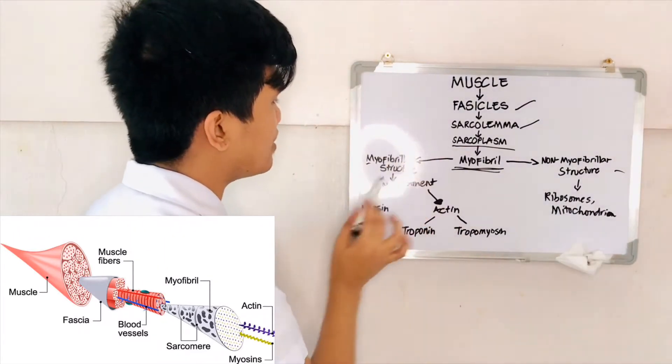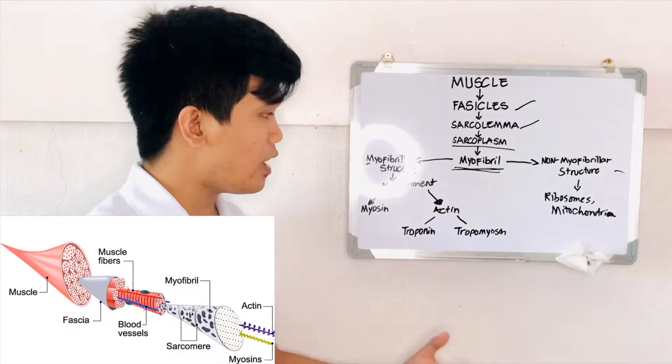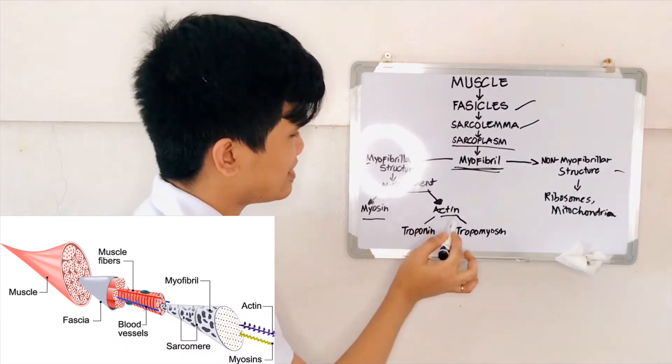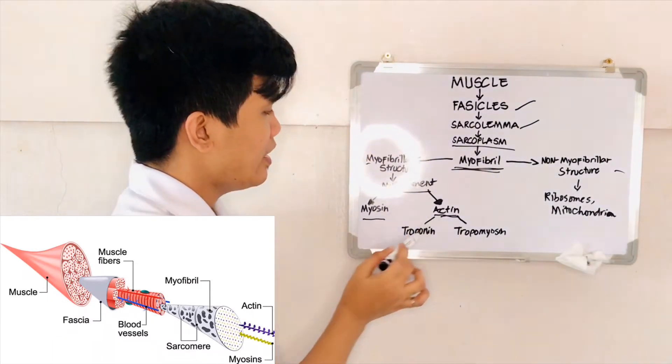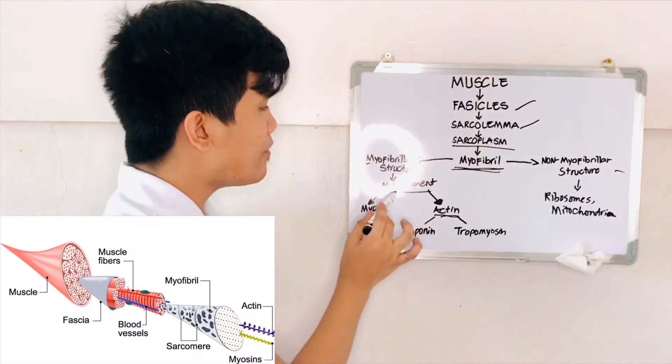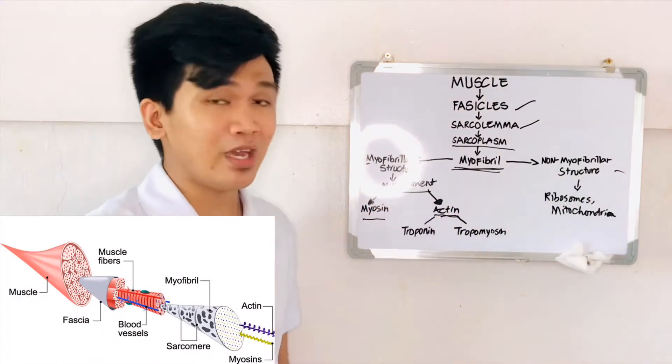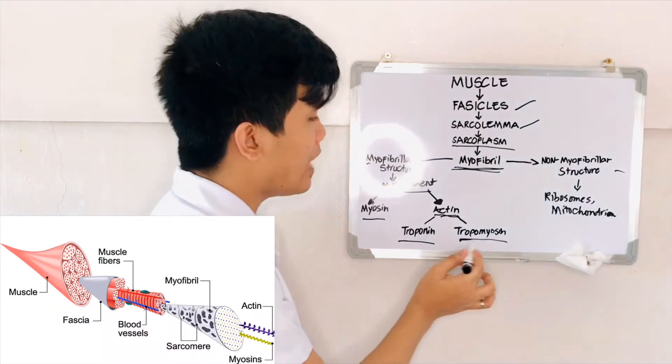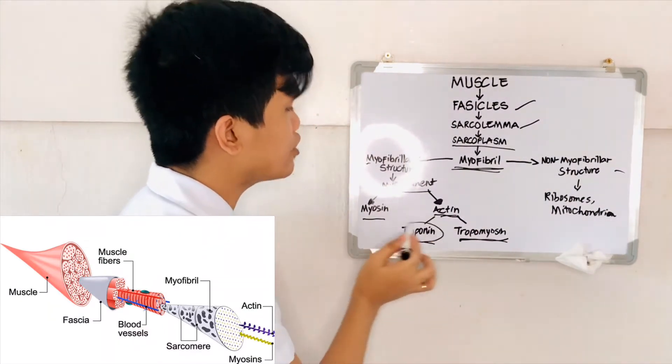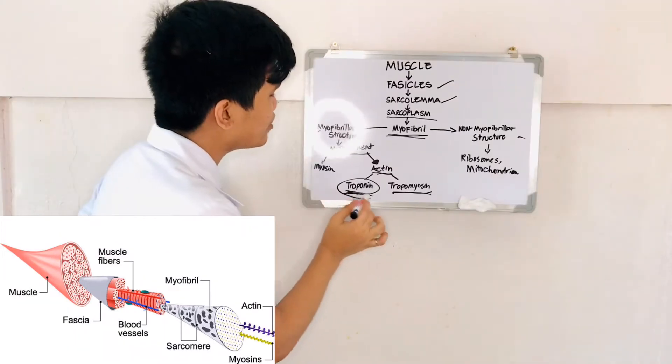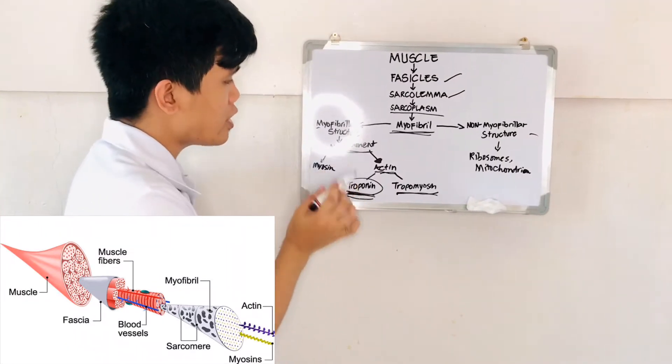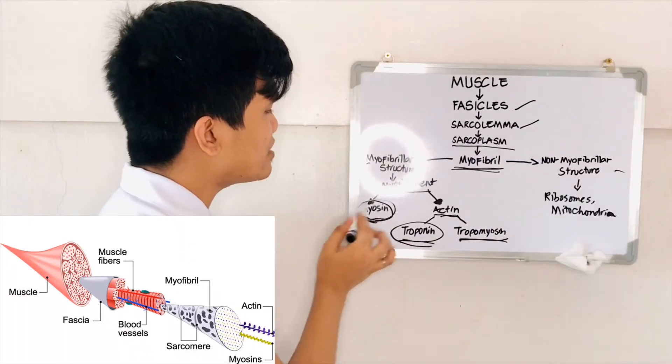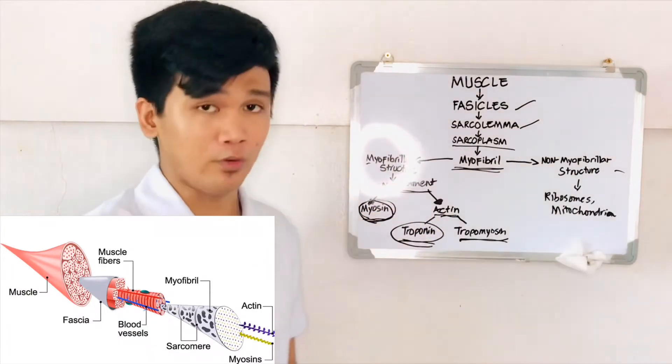While when we say myofibrillar structures, this is made up of myofilament that is divided into myosin and actin. When we say actin, it is a thin myofilament of protein that is divided into tropomyosin and troponin. When we say tropomyosin, it is attached to each troponin. While when we say troponin, it is attached in the notches between two actin strings. So when we say myosin, it is a thick myofilament protein.